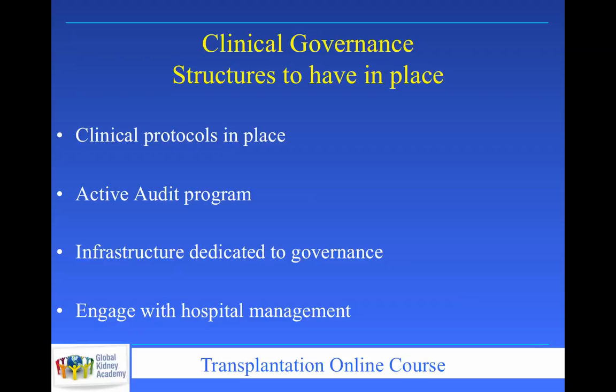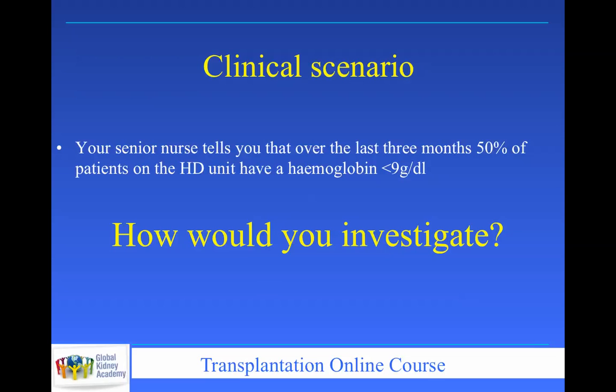We need infrastructure dedicated to governance, and engagement with all hospital management and team. Here's a clinical scenario: your senior nurse tells you that over the last three months, 50% of patients on the dialysis unit have a haemoglobin of less than 9 g/dL — which is unsatisfactory, since most guidelines state that more than 80% should have a haemoglobin around 11–12 g/dL. Obviously, your system is not working. How would you investigate? What can you do?